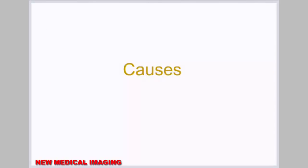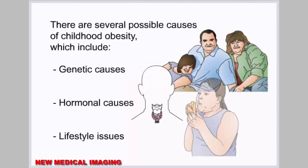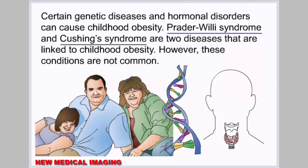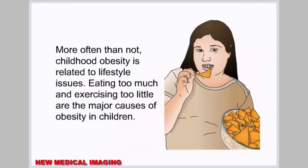There are several possible causes of childhood obesity, including genetic causes, hormonal causes, and lifestyle issues. Certain genetic diseases and hormonal disorders, such as Prader-Willi syndrome and Cushing's syndrome, can cause childhood obesity, though these conditions are not common. More often than not, childhood obesity is related to lifestyle issues — eating too much and exercising too little are the major causes.